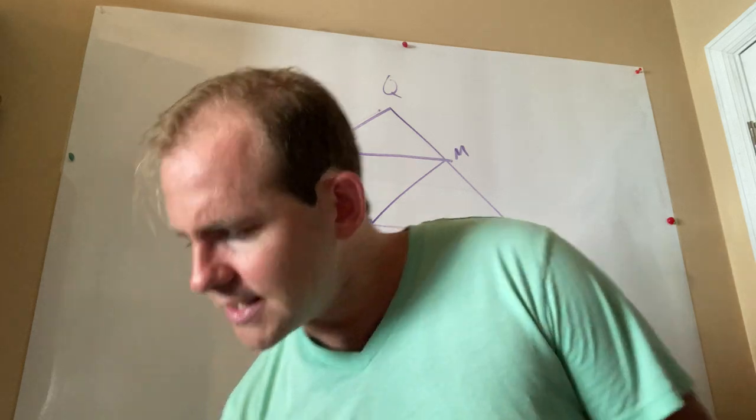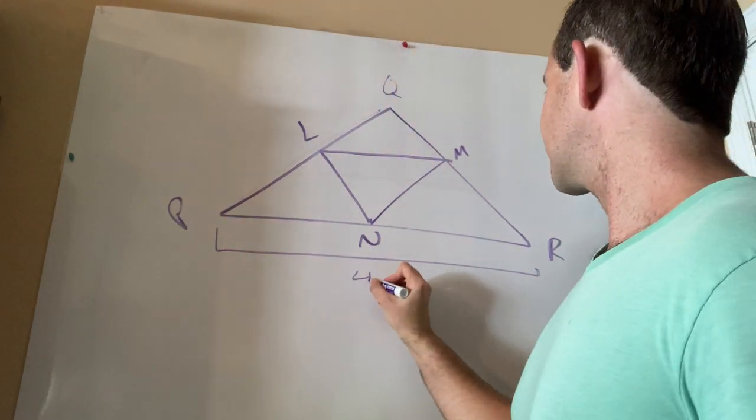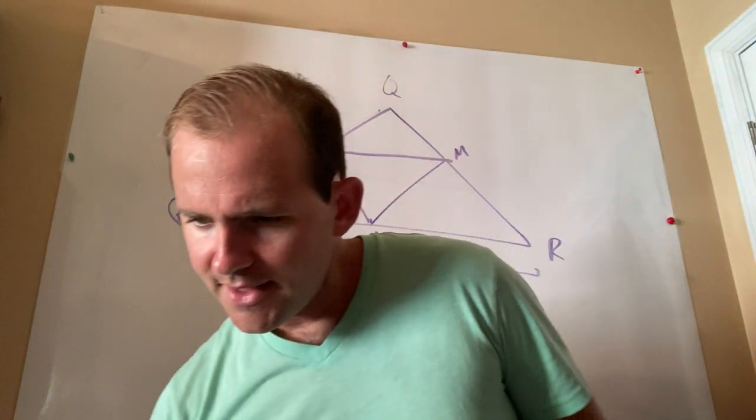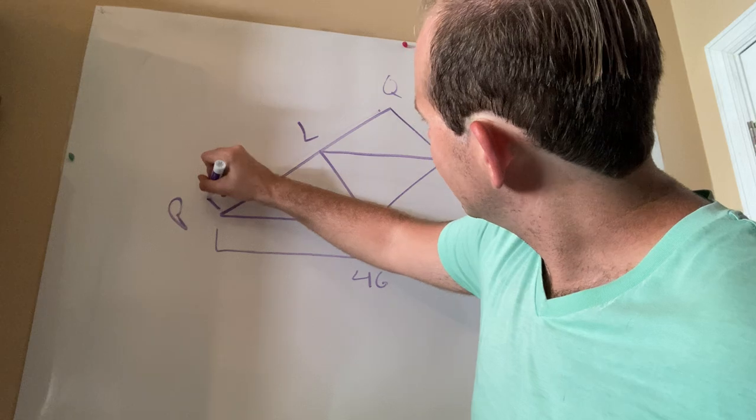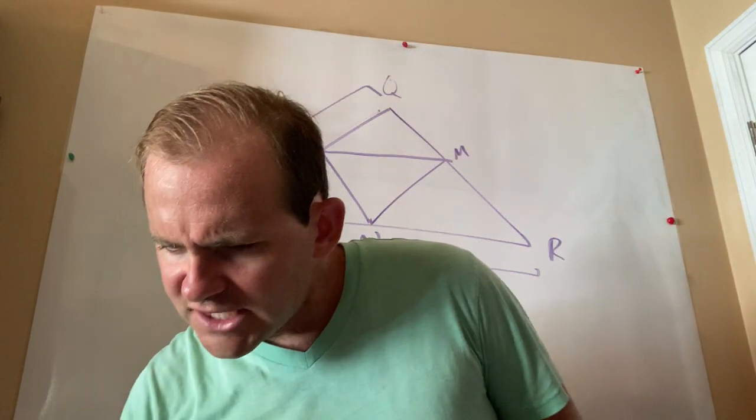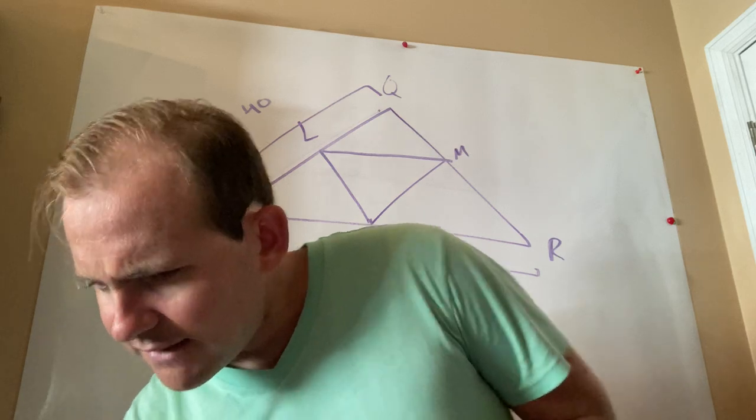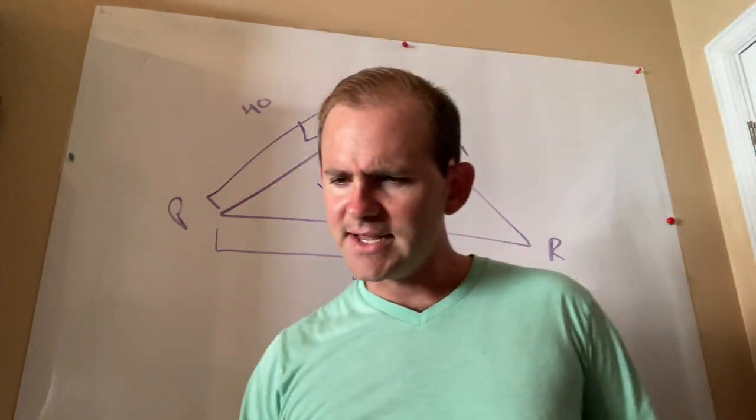So first things first, let's take the information that they give us, guys, and put it in the diagram. So they tell me that PR is 46. So this whole thing right here is 46. Then they tell me PQ is 40. So this thing right here is 40. And last but not least, they tell me LN is 17. So this middle one is 17.